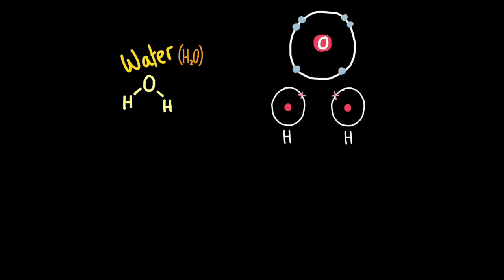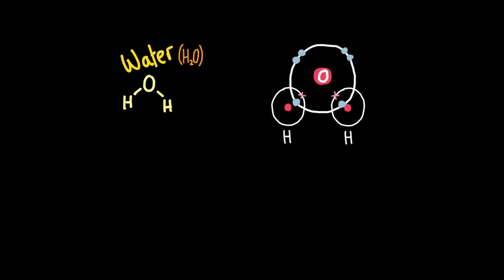Now we'll look at water. Oxygen has six electrons on its outer shell, therefore needs two more to complete its outer shell, so it needs to share two pairs of electrons. Hydrogen needs one more and only has one, so they each need to share one pair of electrons. Oxygen shares two pairs of electrons, one with each hydrogen atom, and hydrogen shares one pair. The count gives eight for oxygen and two each for hydrogen.